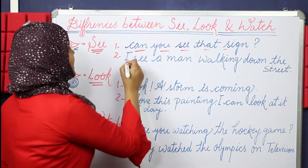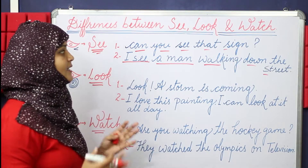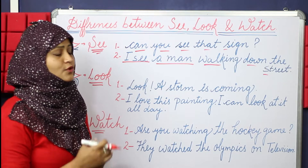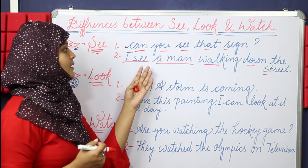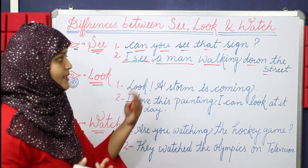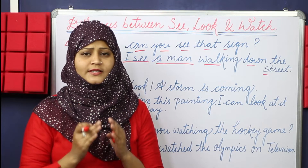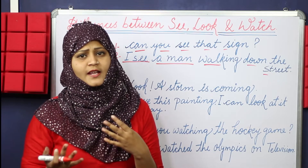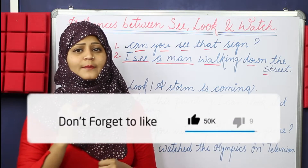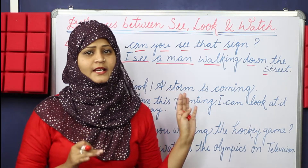So 'see' is used where there are natural things happening and you are not concentrating or thinking about them — you are just looking at them naturally. I hope you have understood that. Now let's see what the second word is.